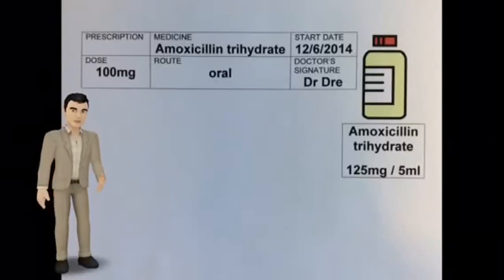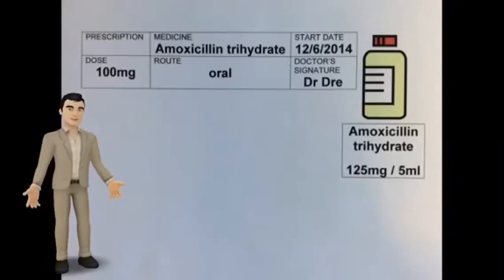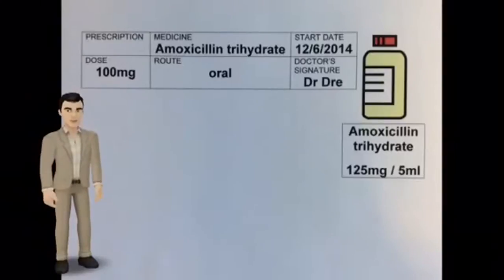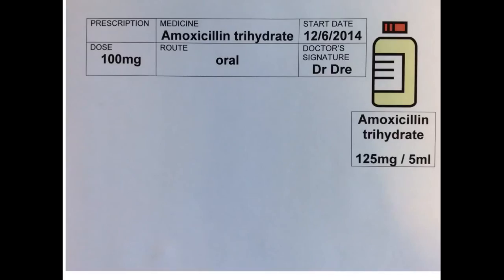Your patient is ordered 100mg of amoxicillin trihydrate orally. 125mg in 5ml of syrup is available. How many millilitres of syrup do you give your patient?